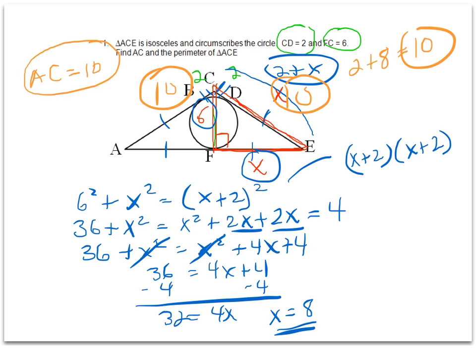The bottom piece FE equals X, and we know that X equals 8, so this piece equals 8. And then of course AF is congruent, so this piece equals 8 as well.